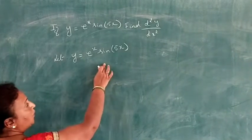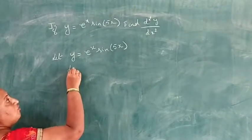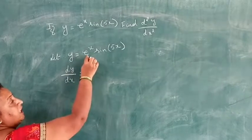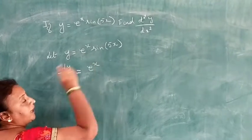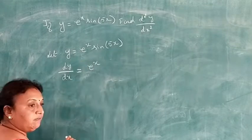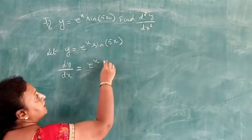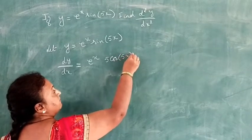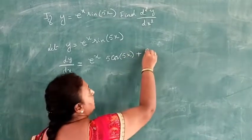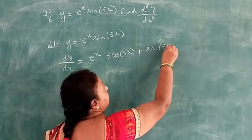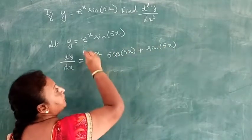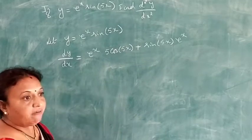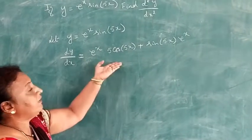Differentiating with respect to x using the product rule: dy/dx equals e to the power x into derivative of sin 5x, which is 5 cos 5x, plus sin 5x into derivative of e to the power x, which is e to the power x.